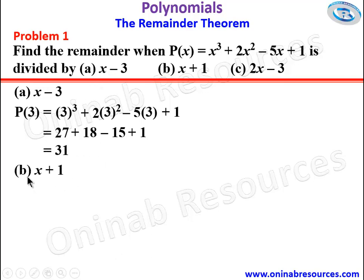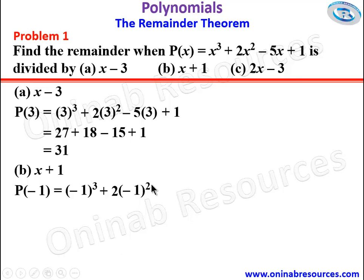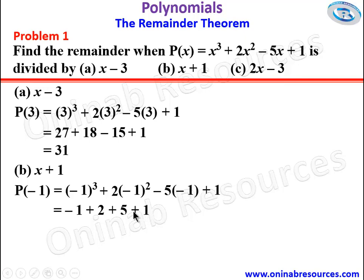For b, we find p of negative 1, since x plus 1 equals 0 gives x equals negative 1. Wherever we see x in the polynomial, we put in negative 1: negative 1 cubed plus 2 times negative 1 squared minus 5 times negative 1 plus 1. Negative 1 cubed gives negative 1; negative 1 squared is 1 times 2 gives 2; negative 5 times negative 1 gives positive 5, plus 1. The remainder is 7.